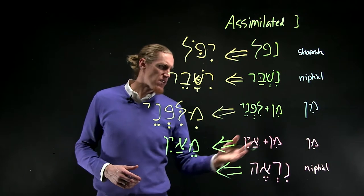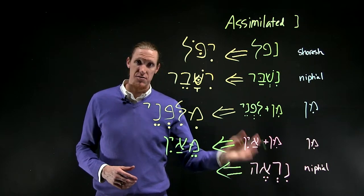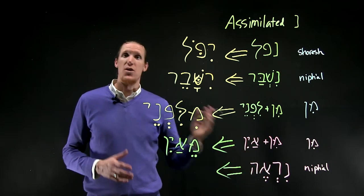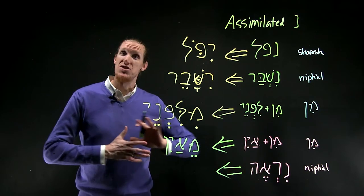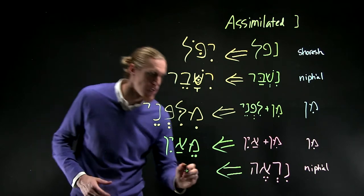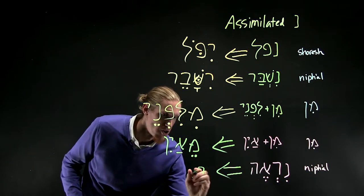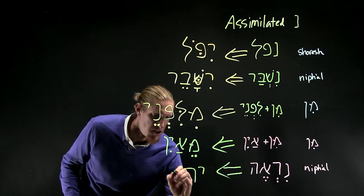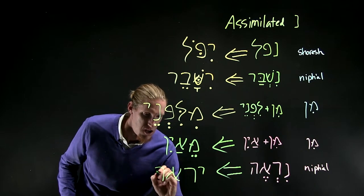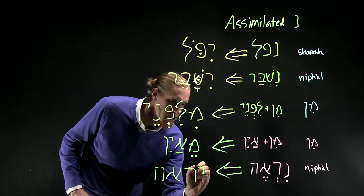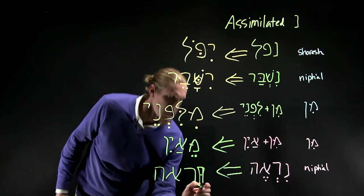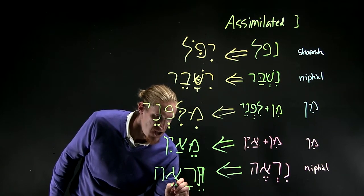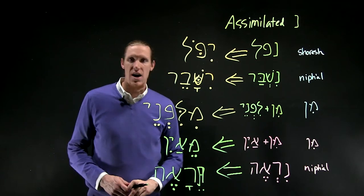And when you have a nifal verb where the first root letter is a guttural, that guttural resh here will reject the dagesh in the imperfect. So then you get, actually let me make this a tav, the dagesh lane there, te-ra-e.